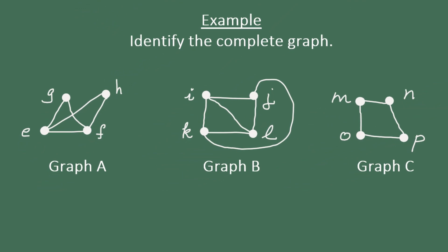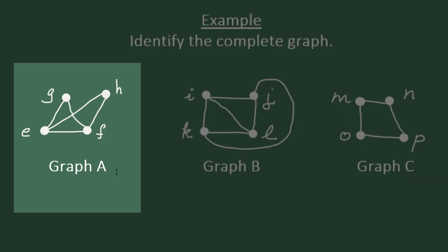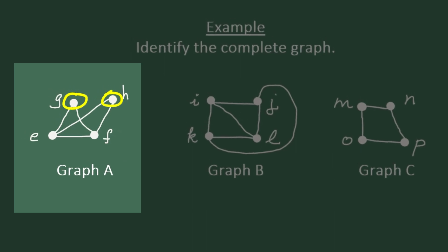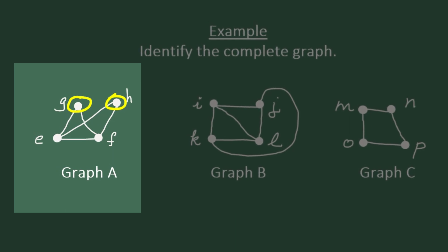So in looking at graph A, do you notice a pair of vertices that are not connected by an edge, that are not adjacent? If you said G and H, you're right. They're missing an edge between them. So graph A is definitely not complete.